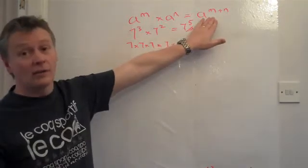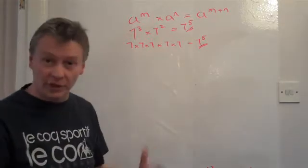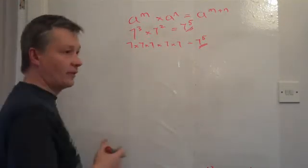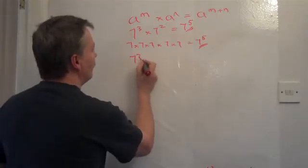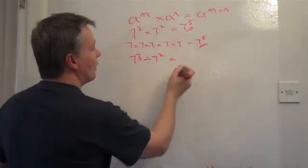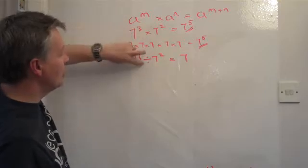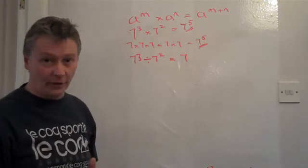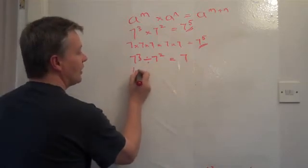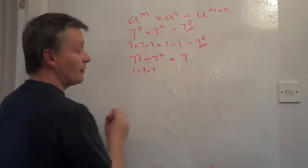You can either use the law or write it out longhand — it works just as well either way. The other option is 7 to the power of 3 divided by 7 to the power of 2, and that equals 7, because multiplication and division are opposite to one another.